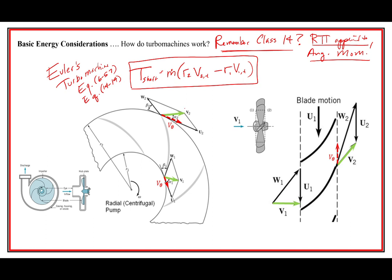The r and tangential velocity need to be perpendicular to each other, so it makes sense that only the tangential component appears. In this view, r2 is the radius and V2-tangential is perpendicular to it. We'll talk about velocity triangles in the next slide. There's also a similar thing taking place for the fan in the axial case, where the tangential velocity is perpendicular to the radius going into the page.